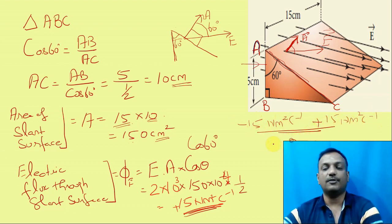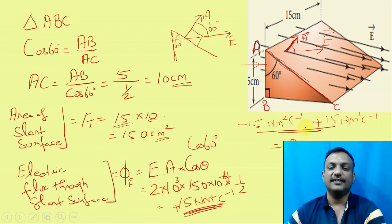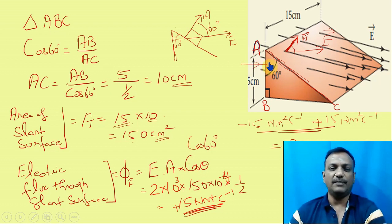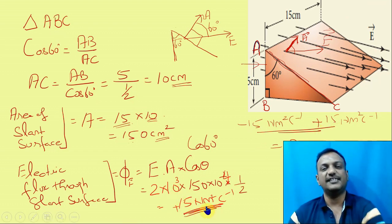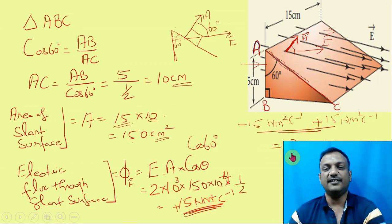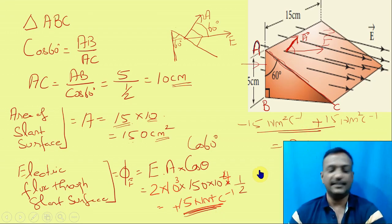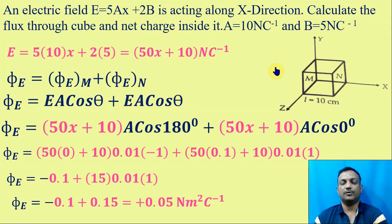So the total net flux is 0. The flux entering is minus 15 and the flux exiting through the slant face is plus 15. If you add both, the total flux is zero. The electric field is acting only in the x-direction. In the y-direction and z-direction, no flux contribution.